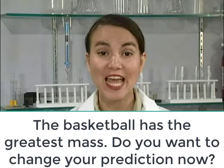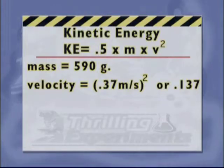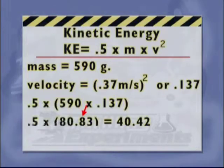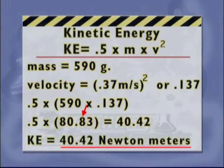We are ready to figure the kinetic energy of the basketball. The mass of the basketball is 590 grams. We have determined the velocity to be 0.37 meters per second. Don't forget to square the velocity — that becomes 0.137. Take our mass of 590 grams and multiply it times 0.137. Our product is 80.83. One half, or 0.5 times this amount, will give us 40.42 newton meters, the kinetic energy of the basketball.